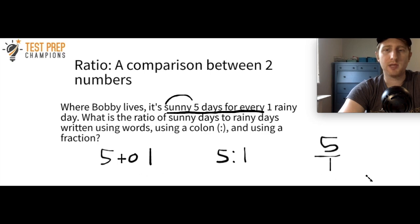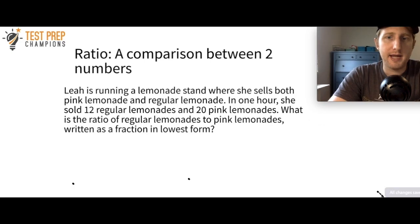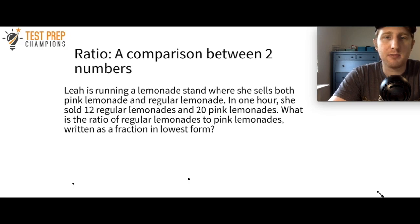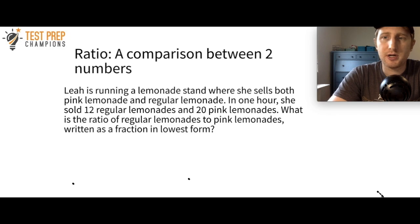Next example: Leah is running a lemonade stand where she sells both pink lemonade and regular lemonade. In one hour she sold 12 regular lemonades and 20 pink lemonades. What is the ratio of regular lemonades to pink lemonades written as a fraction in lowest form? Pause the video and try to figure this out.